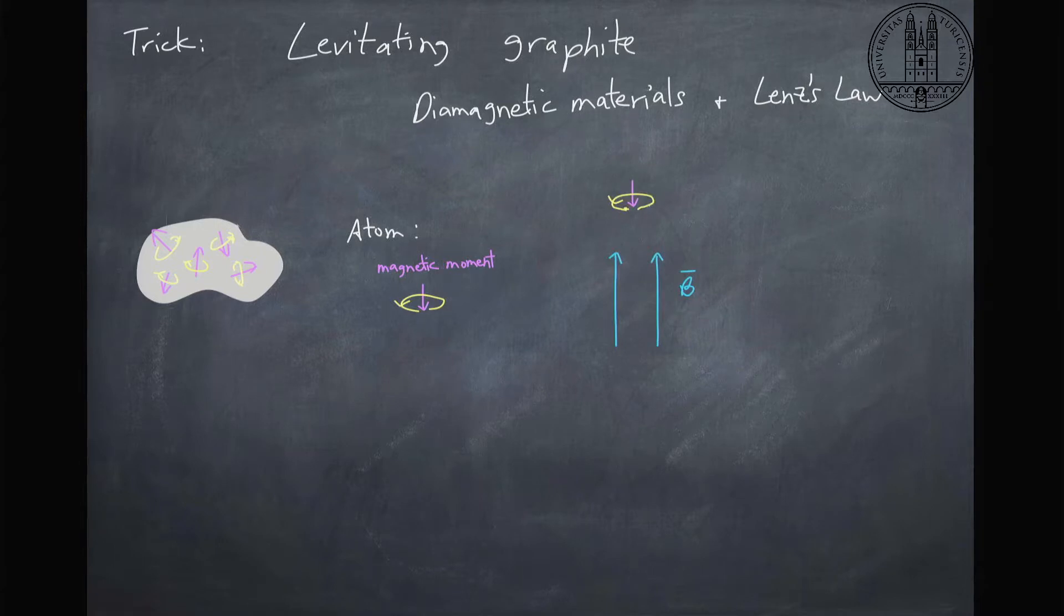Now if I stick one of these atoms in a magnetic field, there will be an induced magnetic moment from a change in the electric current of these atoms. So we get this extra little bit of induced magnetic moment that's in the opposite direction as the magnetic field.